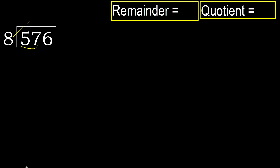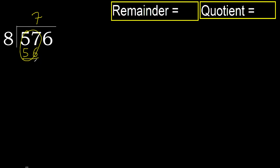but not greater. 8 multiplied by 8 is 64, which is greater. 8 multiplied by 7 is 56, which is not greater. Ok. Subtract: 57 minus 56 is 1.